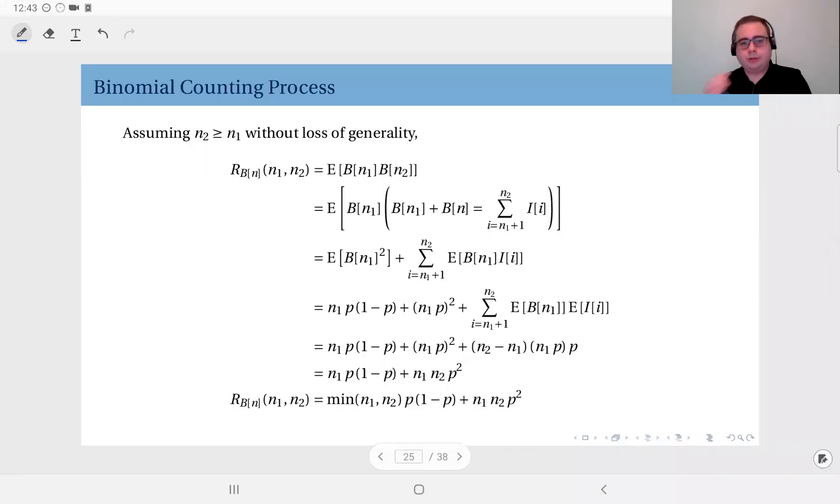Next, we look at the autocorrelation function of the binomial counting process. For this derivation, we will assume n2 is greater than or equal to n1 without loss of generality, because you can always switch these two.